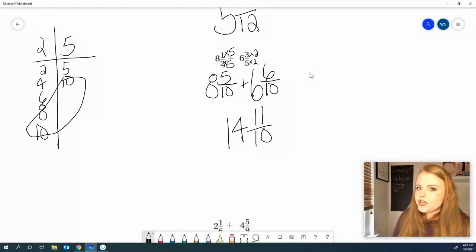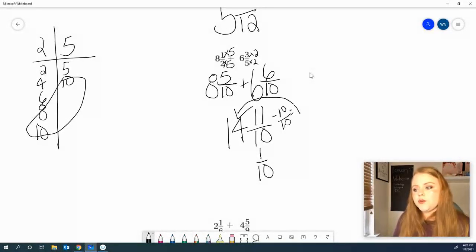14 and 11 tenths. Now, when you're looking at it, you should see that this is an improper fraction. Cannot leave it that way. So, I'm going to subtract 10 tenths. Remember, I'm subtracting 10 tenths because the denominator is 10. If I subtract 10 tenths, I'm going to end up with 1 tenth. That 10 tenths was going to equal 1. Pull it over here. Put it with the 14. I get 15. 15 and 1 tenth is not able to be simplified, so that's your correct answer.